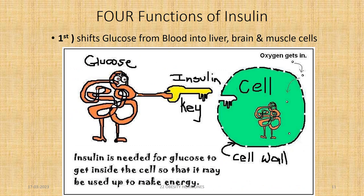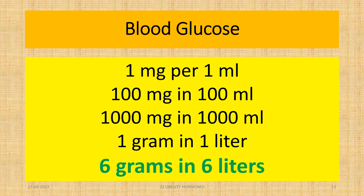There are four functions of insulin. The first and foremost is it shifts glucose from blood plasma into liver, brain and muscle cells. Our brain and body don't like sugar more than 1 milligram per 1 ml of blood — that is 100 mg per 100 ml, or 1 gram per liter. Our body has 6 liters of blood, so at any given time total glucose in blood is 6 grams. Insulin keeps regulating this. If sugar goes above this, insulin kicks in to reduce it. If sugar goes below this level, the opposite hormone glucagon kicks in to bring the sugar back up.